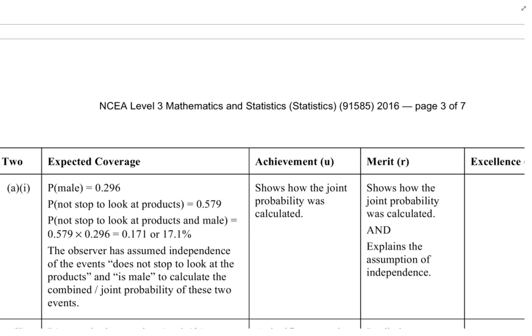For merit, which was the maximum, you had to show how the joint probability was calculated, explain the assumption of independence. And that really needed to be in context too. If you just said the two events are independent, don't expect to get the merit grade. You've got to say what the two events are. There's got to be context language. Does not stop to look and is male needs to be there.